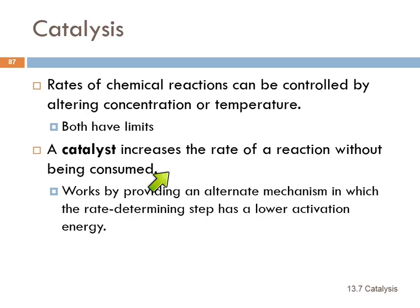What a catalyst does is it increases the rate of a reaction without being consumed. It might appear on the surface to be one of the reactants, but it's not, because the reactants get converted into products while the catalyst stays there. The way a catalyst works is that it provides an alternate mechanism to that rate-determining step—an alternate pathway with a lower activation energy—so everything goes faster because of that.